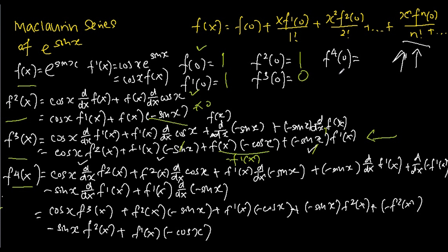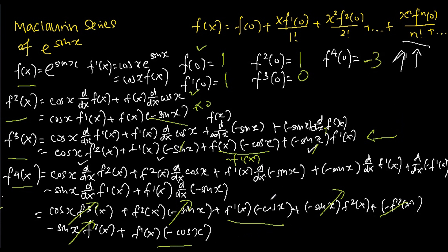For f''''(0), we can ignore all terms containing sine x since sine 0 is 0, and we can also ignore terms containing f'''(0) since f'''(0) equals 0. We only need to focus on the remaining three terms, which each evaluate to negative 1, giving f''''(0) equals negative 3.